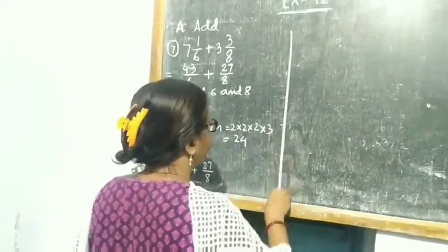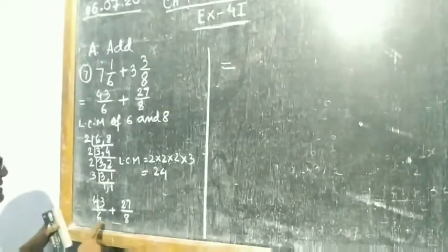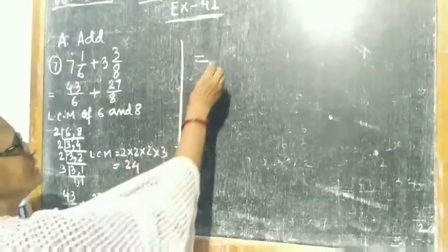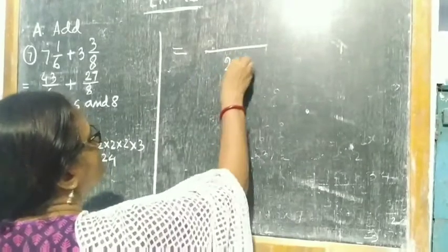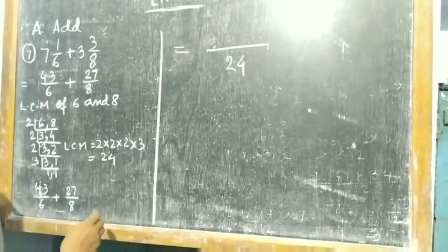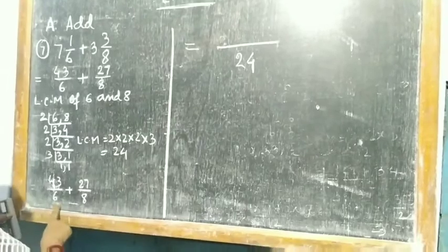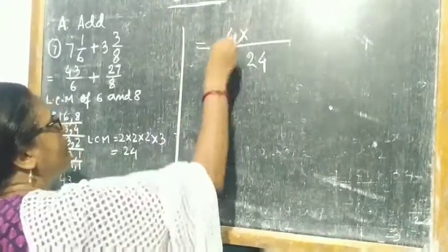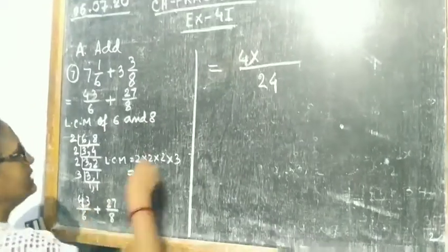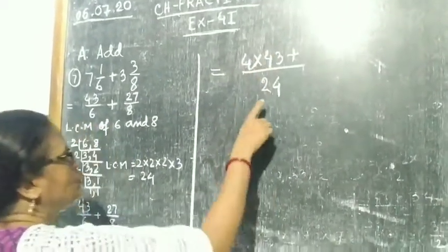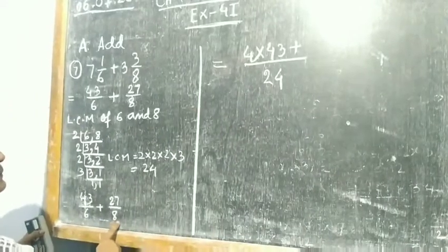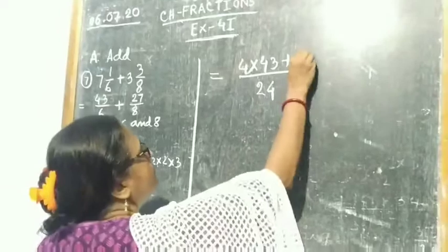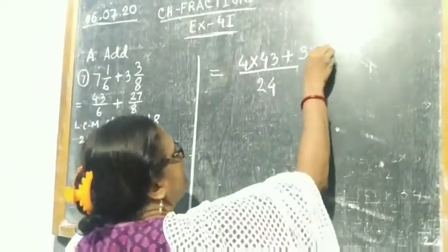The LCM of 6 and 8 is 24, so in the denominator you write 24. Now 24 divided by 6 is 4, so 4 into the numerator 43. Plus 24 divided by 8 is 3, so 3 into the numerator 27.